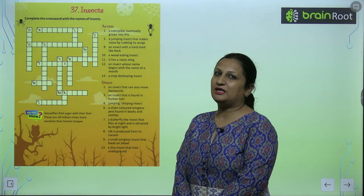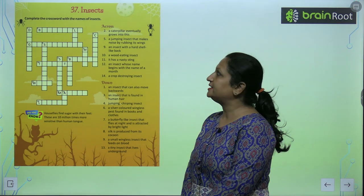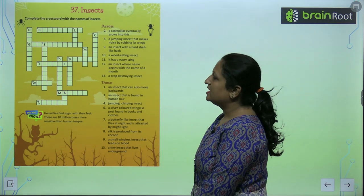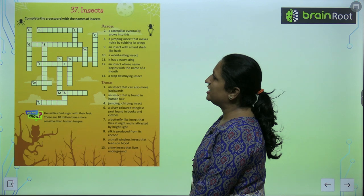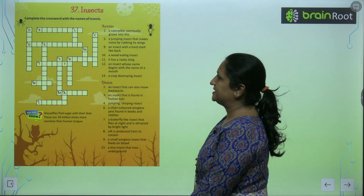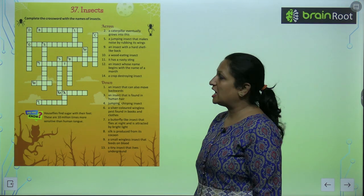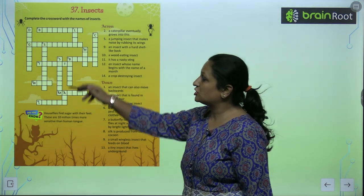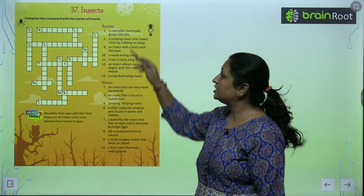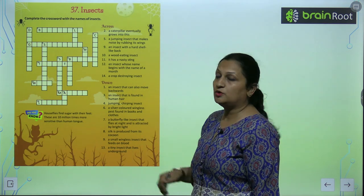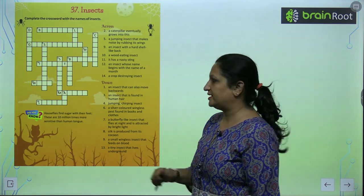Children, let's begin with chapter number 37: Insects. Complete the crossword with the names of insects. We have a crossword here which we need to solve using the given clues.